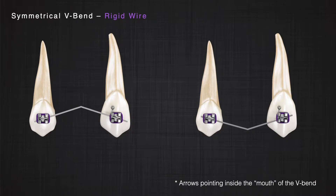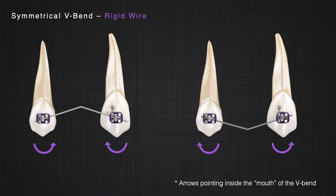From the previous session, we discussed the two couple system in rigid wires. If we have two brackets of similar width placed at similar height on adjacent teeth and we put a rigid wire between them, there should be no force or moment in the system. But if we apply a V-bend equidistant from the adjacent brackets, two moments will appear — equal in magnitude and opposite in direction — with no force in the system. The direction of those moments always points toward the mouth of the V-bend.